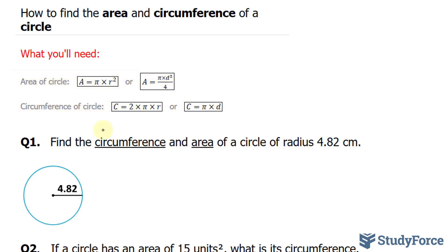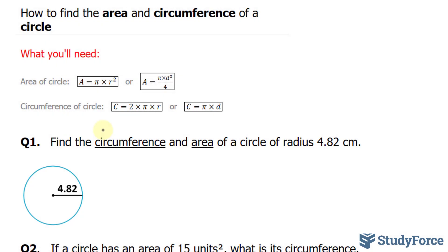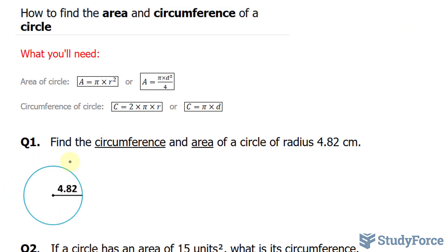Let's start with question number one. We're asked, find the circumference and area of a circle of radius 4.82 centimeters. We'll start with circumference. Circumference is a word for the perimeter of the circle, in other words, the distance around the shape.